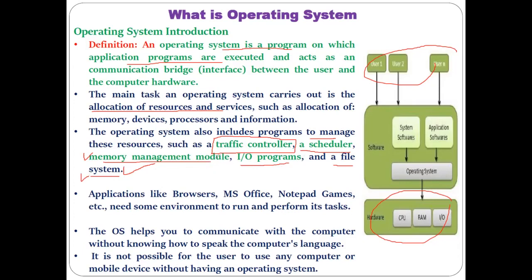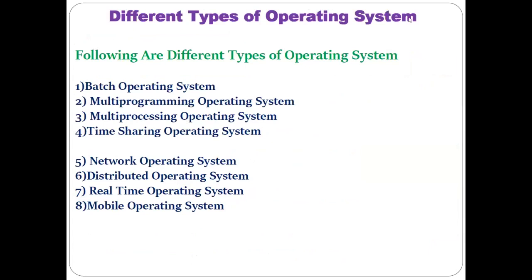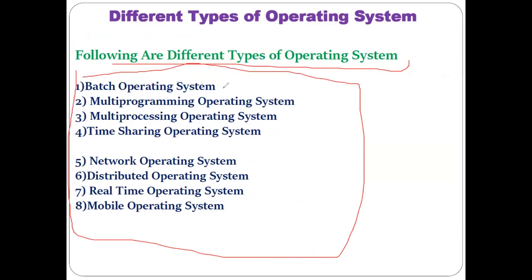With the help of these programs, different resources can be easily managed by the operating system. Applications like a browser, MS Office, Notepad, and games — if you want to run these on a computer, you need the operating system; there is no alternative. The operating system helps us communicate with the computer even without knowing the computer language, so it is not possible to use any computer or mobile device without an operating system.